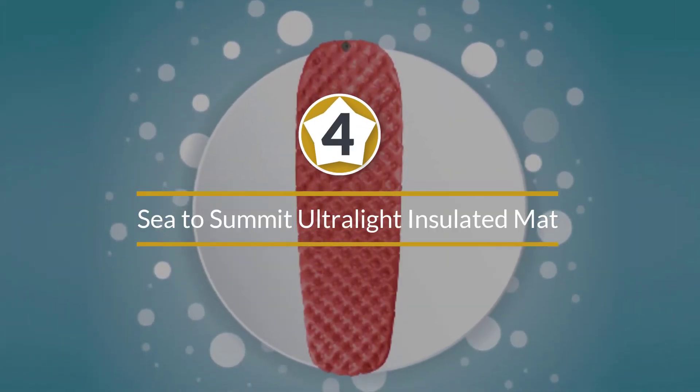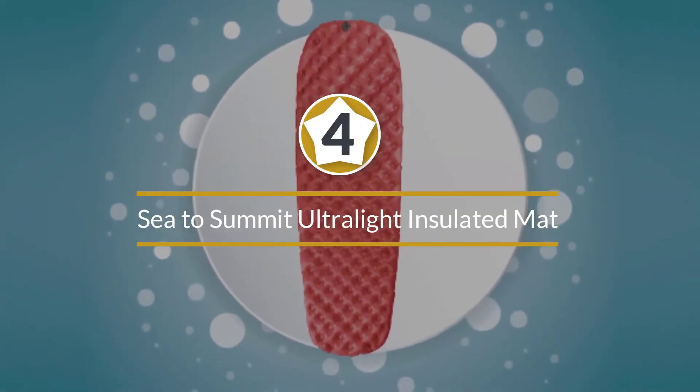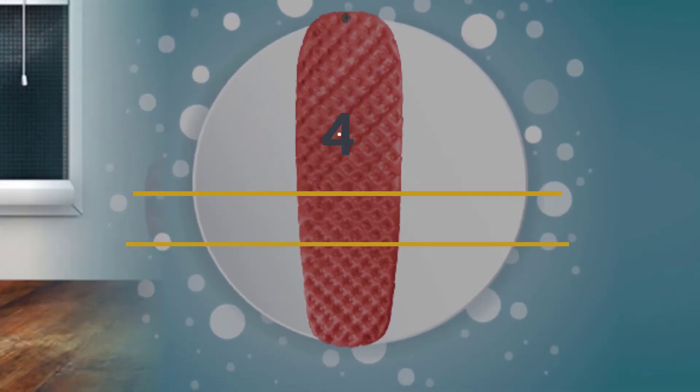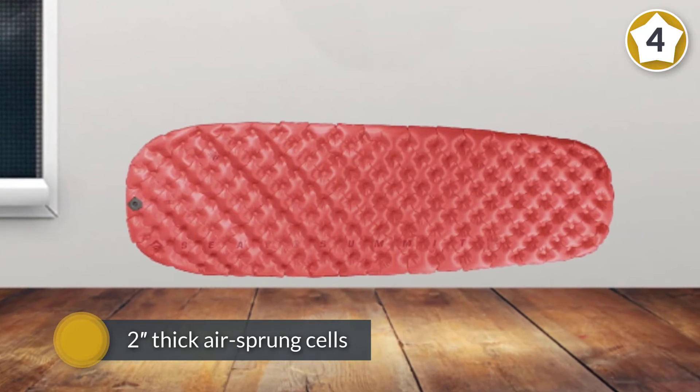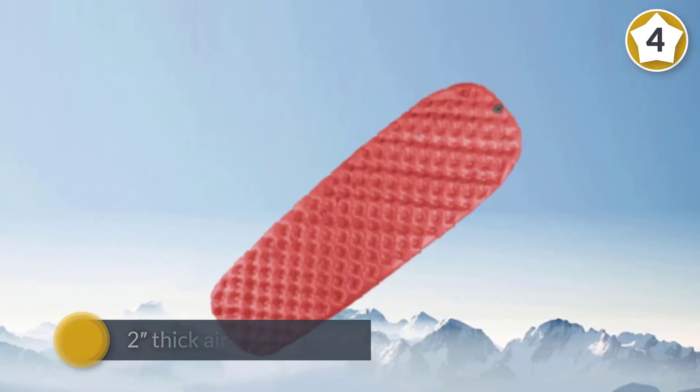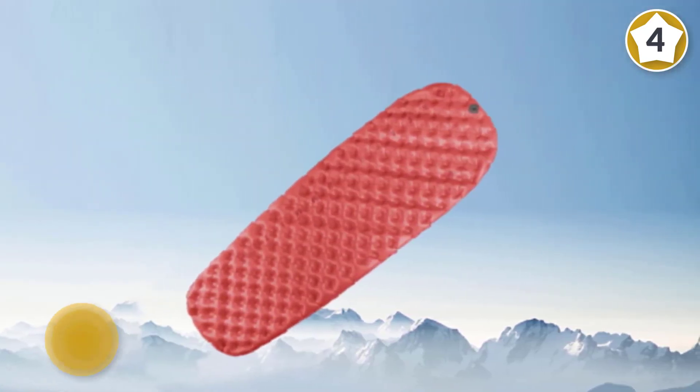Number 4. Sea-to-Summit Ultralight Insulated Mat Sleeping Pad. This has 2 inches thick air-sprung cells that adapt to a sleeper's curves like the mattress of their bed at home, providing excellent comfort for side and back sleepers.